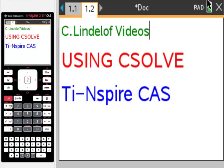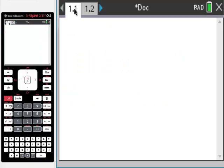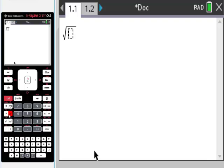Okay, C Lindelof Videos, using the csolve function on your TI-Nspire CAS calculator. This is actually a really cool function and it does some things that other calculators can't do. So let's look at it for a second. It solves this kind of problem. Let's say you wanted to know what the square root of negative 25 was.